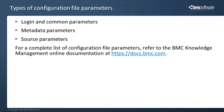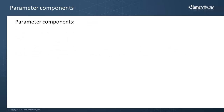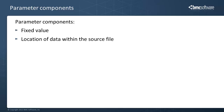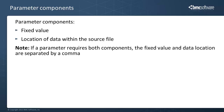For a complete list of configuration file parameters, refer to the BMC Knowledge Management online documentation. Configuration file parameters contain two components: a fixed value, and the location of a knowledge article field within each source file. Some parameters require you to specify both components, in which case you use a comma to separate the values.